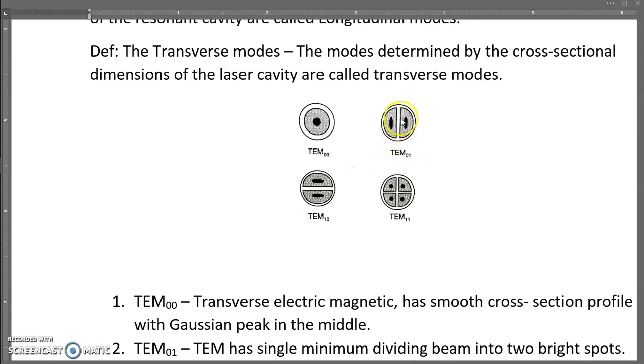This has a single minimum dividing the beam into two bright spots. Similarly, here you have a single minimum dividing the beam into two bright spots. Whereas here you have two minimums perpendicular to each other, dividing the beam into four bright spots.